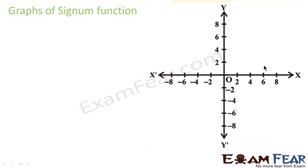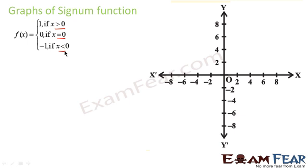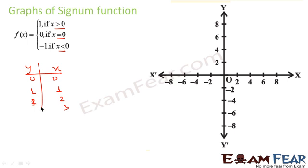Now let's take the graph of the signum function. The signum function is defined as: f(x) = 1 if x > 0; f(x) = 0 if x = 0; and f(x) = −1 if x < 0. Let's create a table: for x = 0, y = 0; for x = 1, y = 1; for x = 2, y = 1; for x = 3, y = 1; for x = −1, y = −1; for x = −2, y = −1; for x = −3, y = −1.